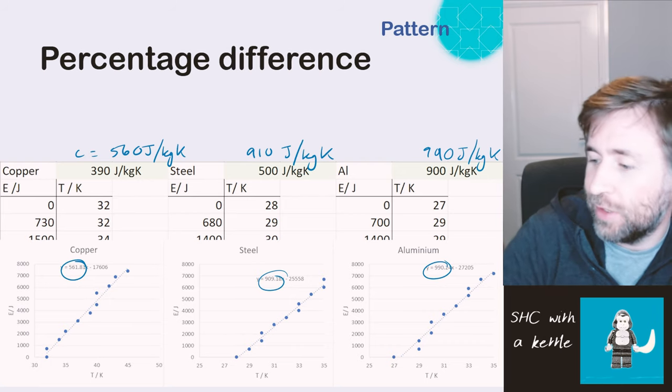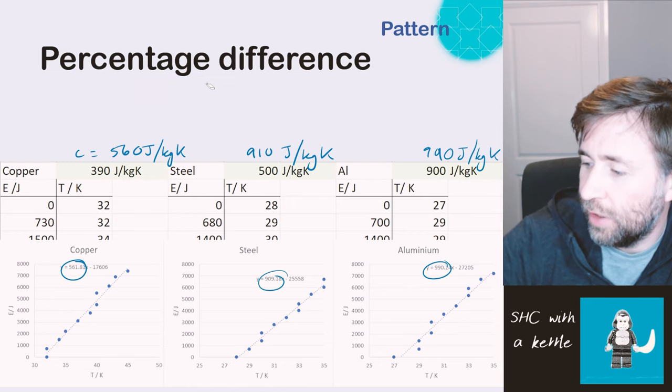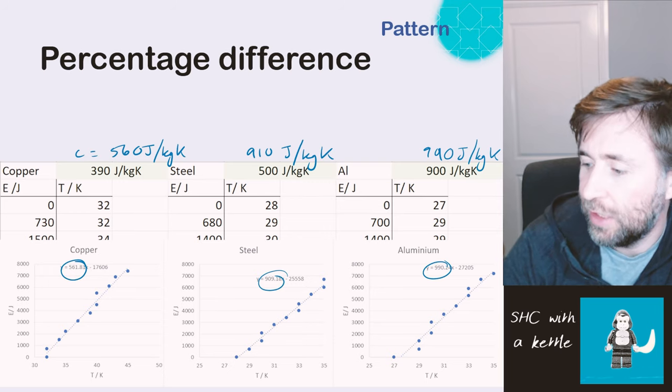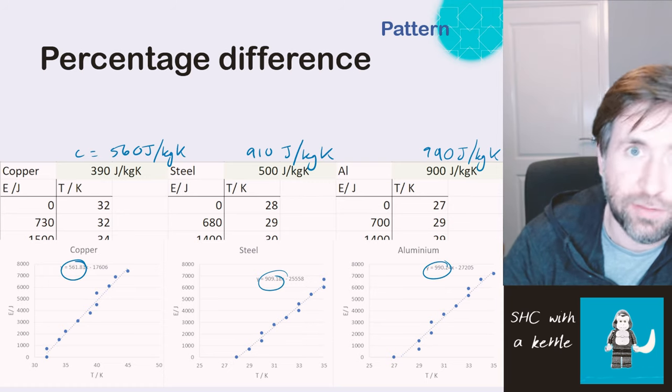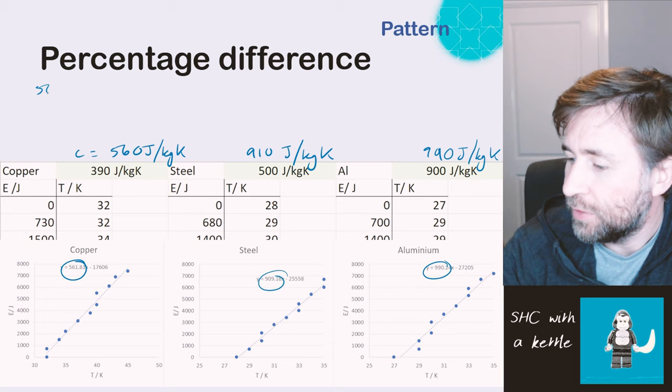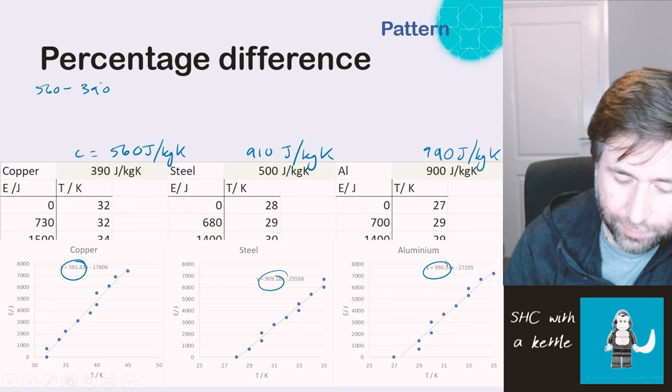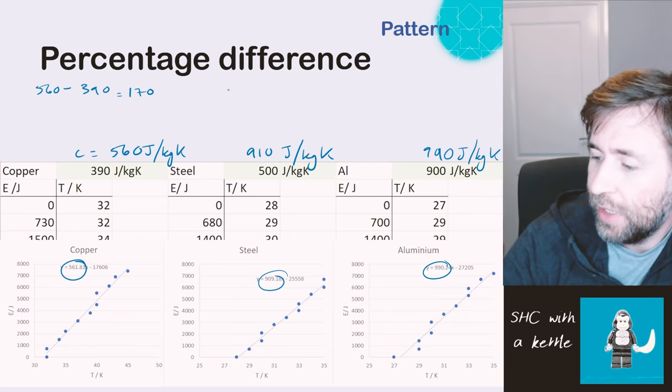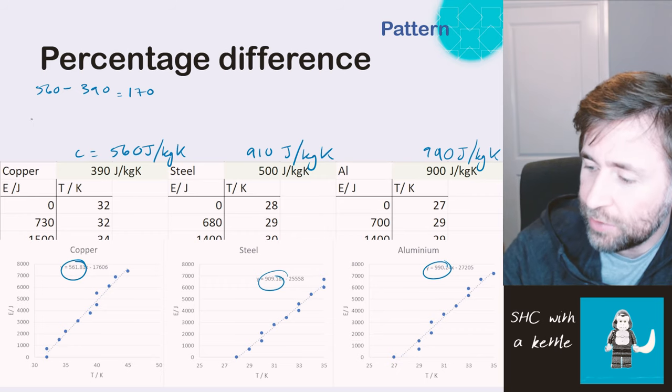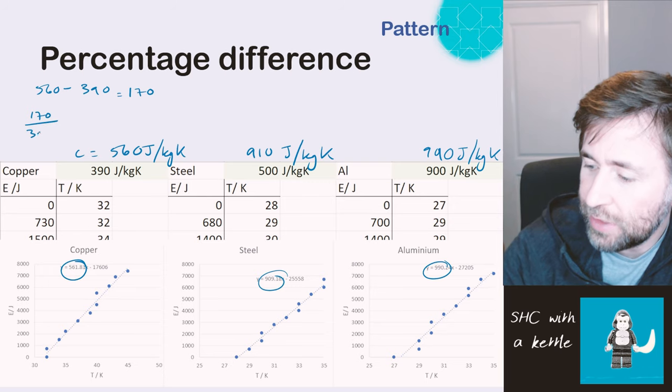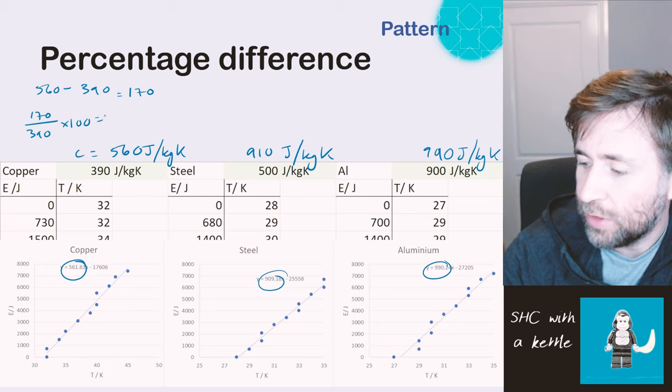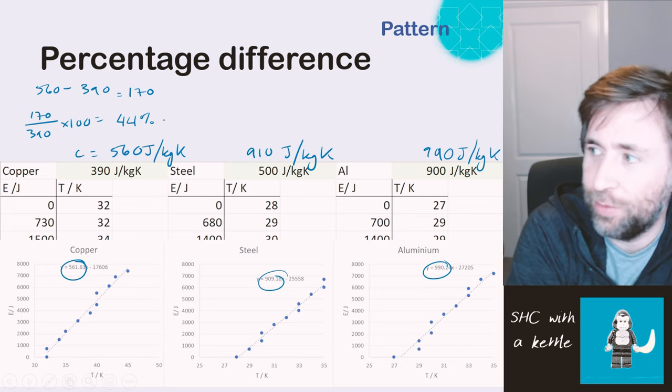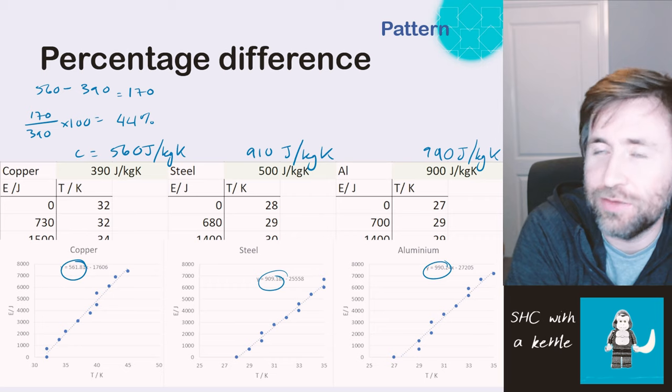Now one really good way to evaluate a practical is to calculate a percentage difference. So I'm going to do that now for each of these. A percentage difference is just how far away you were divided by the value and that expressed as a percentage. So how far away was I from the true value of copper? The difference was 560 take away 390, which is 170. That's how far away I was from the value I was trying to measure, and the actual true value was 390. So my percentage difference is going to be 170, the difference as a percentage of the true value, divided by 390 times by 100 to turn it into a percent. 44% difference. That's pretty poor.